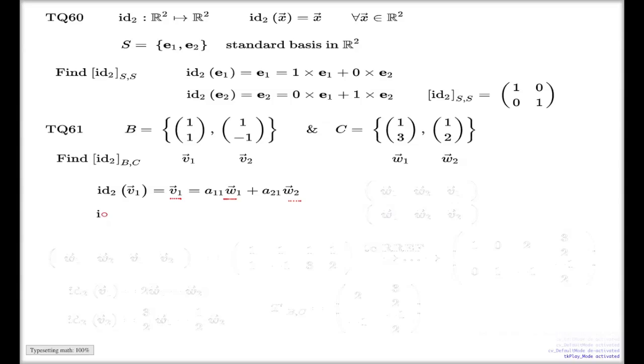The same story for v₂. Identity applied to v₂ is simply v₂, and I will need these coefficients, yet unknown, which will give me v₂ as a linear combination of w₁ and w₂. I hope you understand the reason I indexed my coefficients like this. Because when we find these coefficients, this set of coefficients in the first line will be the first column of my matrix, and the second set will be the second column.